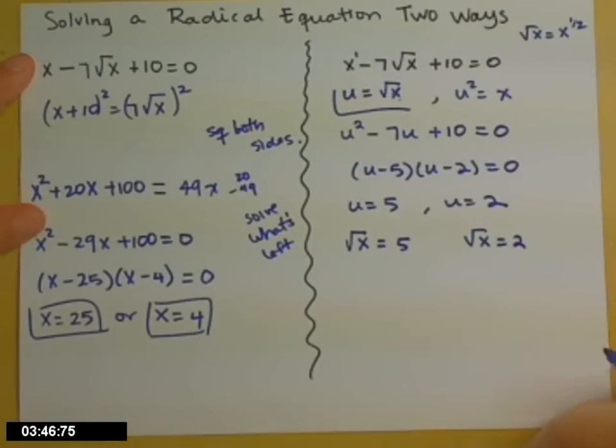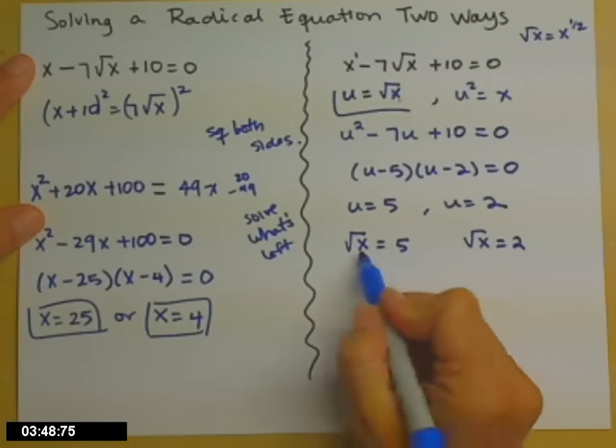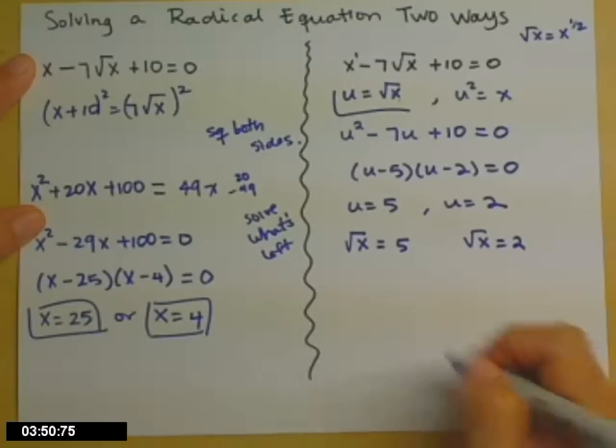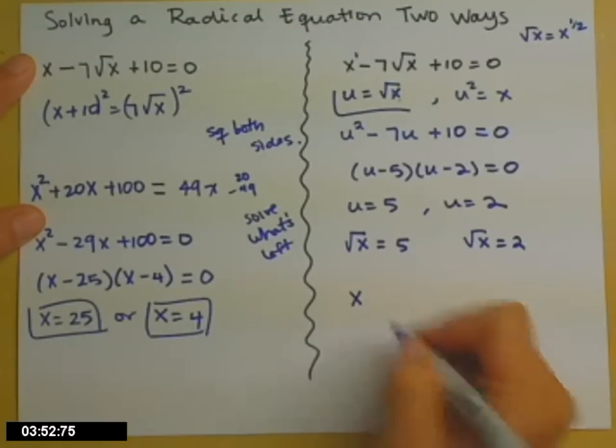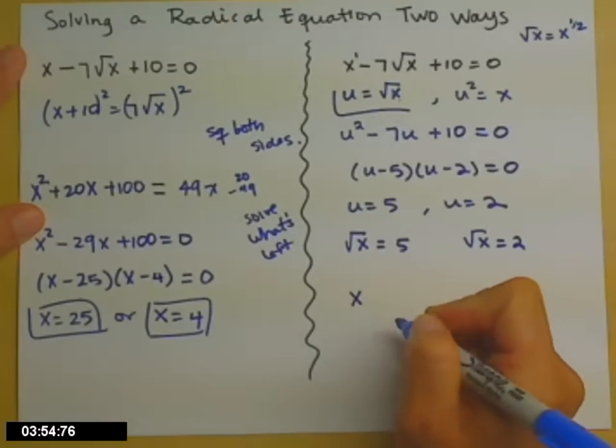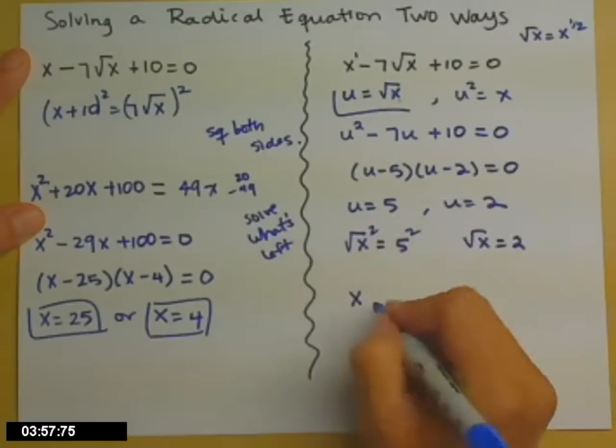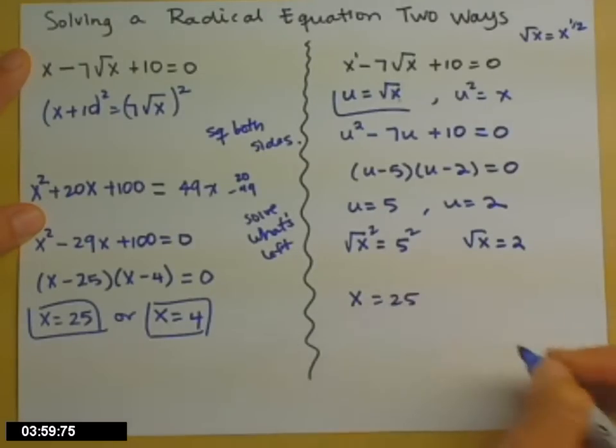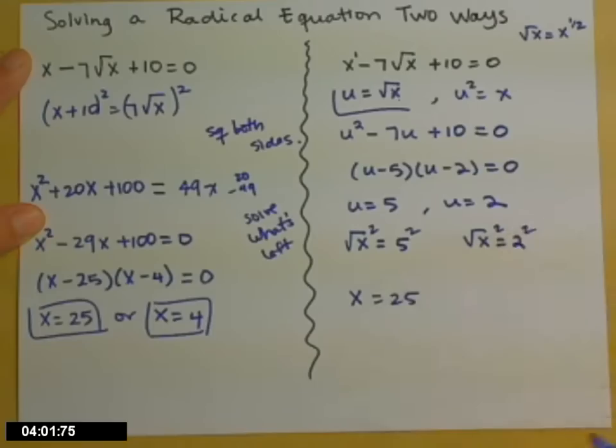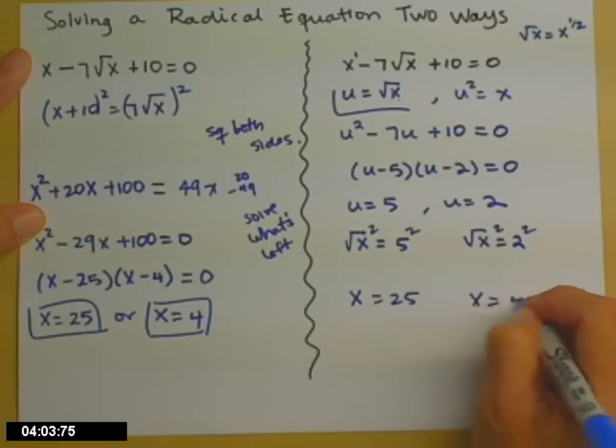Again, don't stop until you have x equals, and you're not there yet. So to get from square root of x to x, we square both sides. That's not plus minus. Plus minus is when you square root both sides. So square both sides. x is 25. Square both sides to get x equals 4.